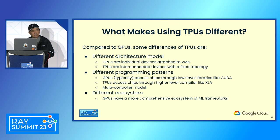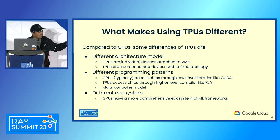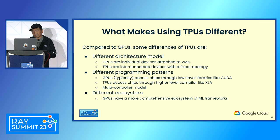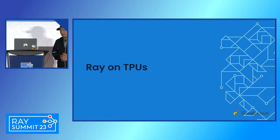Finally, there is a difference in the ecosystem. GPUs have been around a lot longer, so they have a more comprehensive ecosystem of ML frameworks. Those are a few ways in which TPUs are different from GPU workloads today. What we are trying to solve is to make the TPU experience mirror GPUs as much as possible. Winston is going to talk about a few ways we can make that happen.